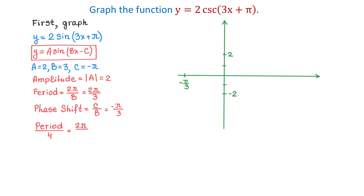2 pi over 3 divided by 4 equals 2 pi over 3 times 1 over 4. Dividing 2 and 4 by 2 gives us a quarter period of pi over 6. We need to find the x-coordinates of the five points, and the first x-coordinate will be negative pi over 3. So we write x equals negative pi over 3.